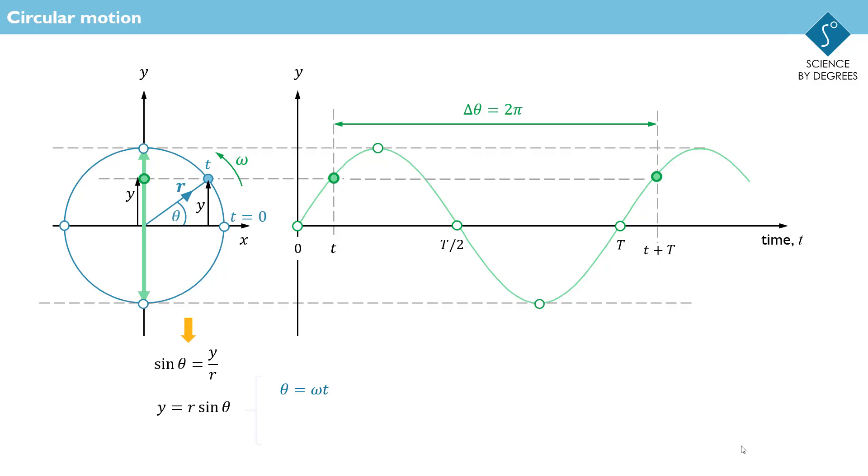However, theta is not that useful in itself because the thing is moving, whereas the angular velocity, omega, or the frequency, f, are constant quantities that link theta to time. So using theta equals omega t and theta equals 2pi ft,